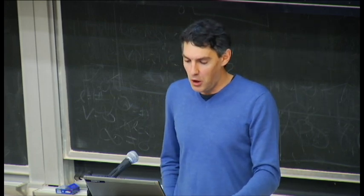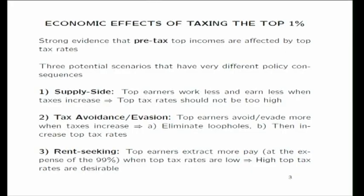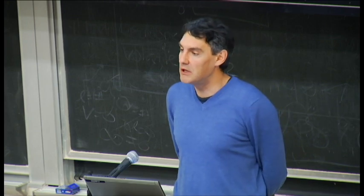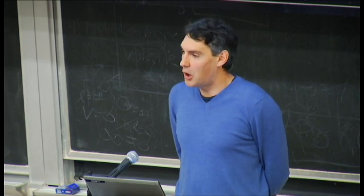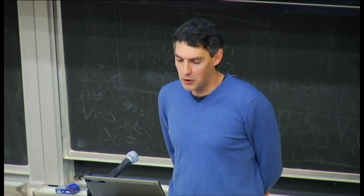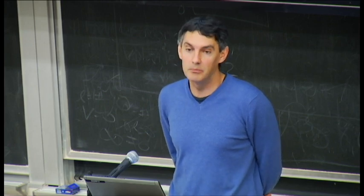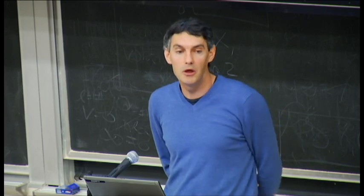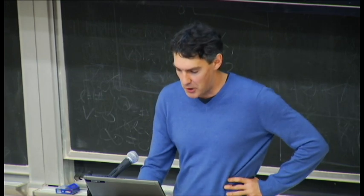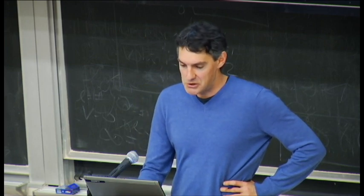The third scenario is what I call the rent-seeking scenario, where top earners extract more pay at the expense of the bottom 99 percent when top tax rates are low. The idea is that high top tax rates weaken the bargaining position of top earners and put a lid on top compensation. Under this scenario, high top tax rates are actually desirable because they keep income inequality in check and redistribute resources toward the bottom 99 percent.